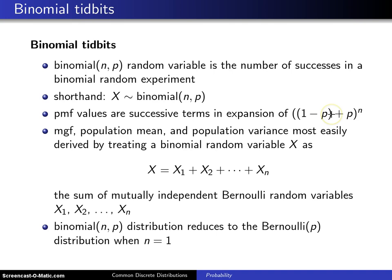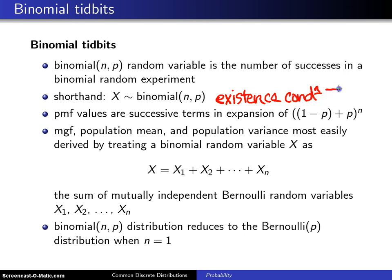There are going to be a total of N plus 1 terms, and each one of those terms is the same as the probability mass function of the binomial distribution. If you add 1 minus P and P, you get 1, and 1 raised to the N power is just 1. That demonstrates the existence condition for any discrete distribution, which is that the sum over the support of F of X must equal 1.